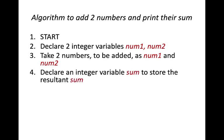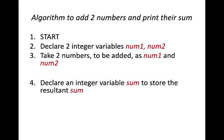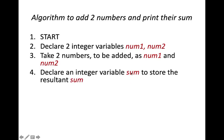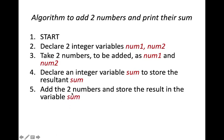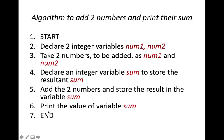Step 4: Declare an integer variable called 'sum' to store the result — use 'sum' itself, not 's', so it is clear this variable stores the added numbers. Step 5: Add num1 and num2 and store the result in sum. Step 6: Print sum. Step 7: Stop. You can also combine some steps — declare num1, num2, and sum together — to reduce the number of steps.